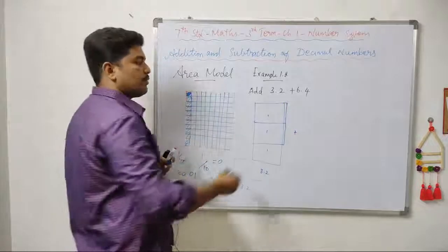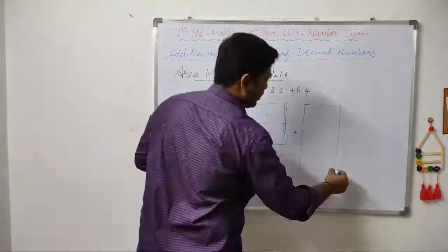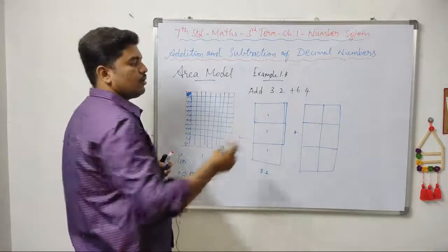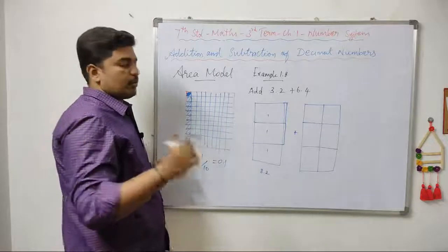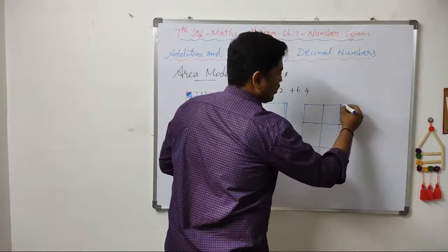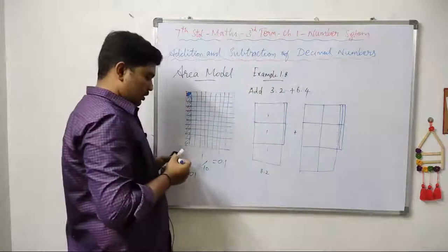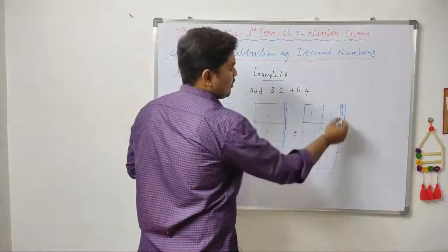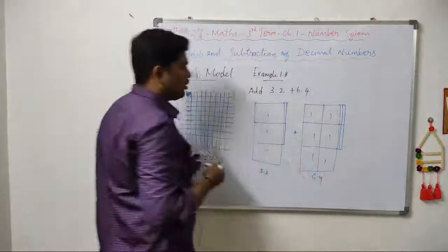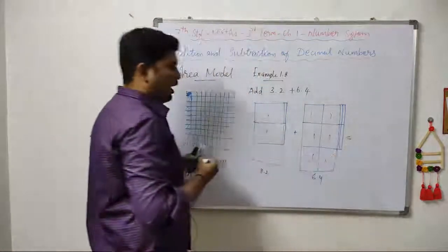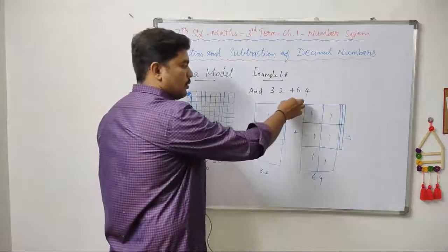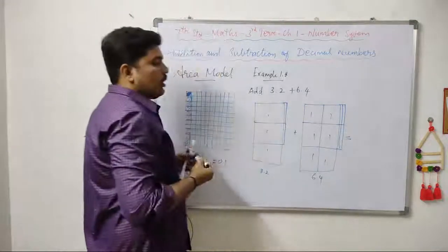The next number is 6.4. We have 6 whole squares. Then, four small squares — each 1 by 10 strip — give four parts. Counting the whole squares: 1, 2, 3, 4, 5, 6, 7, 9. There are 9 whole squares. The 1 by 10 parts are: 1, 2, 3, 4, 5, 6 — there are 6 strips.